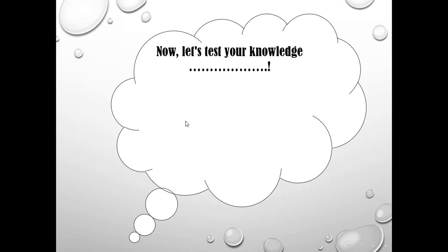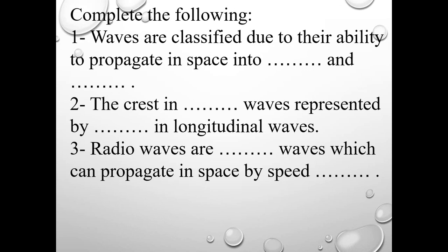Let's test your knowledge. Waves are classified according to their ability to propagate as mechanical and electromagnetic. The crest in transverse waves corresponds to compressions in longitudinal waves. Radio waves are electromagnetic transverse waves that can propagate through space at a speed of 3 × 10⁸ meters per second. Thank you — please study this lesson well and see you in unit two.